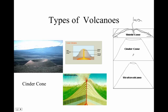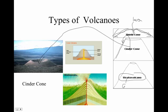Cinder cones are usually characteristic of pyroclastic flow. They're much more violent, and usually it's ash that builds up making the volcano steep. Here is an example of a cinder cone. And a stratovolcano — sometimes called a composite cone — is a combination of both. Sometimes cinder comes out and sometimes lava, and you can see in this picture the different layers.